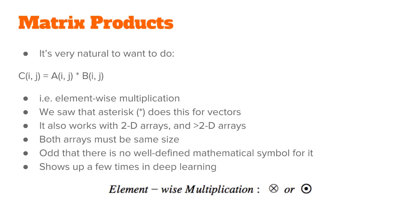A very natural thing to want to do, both in math and in computing, is element-by-element multiplication. For vectors, we already saw that an asterisk operation does this.